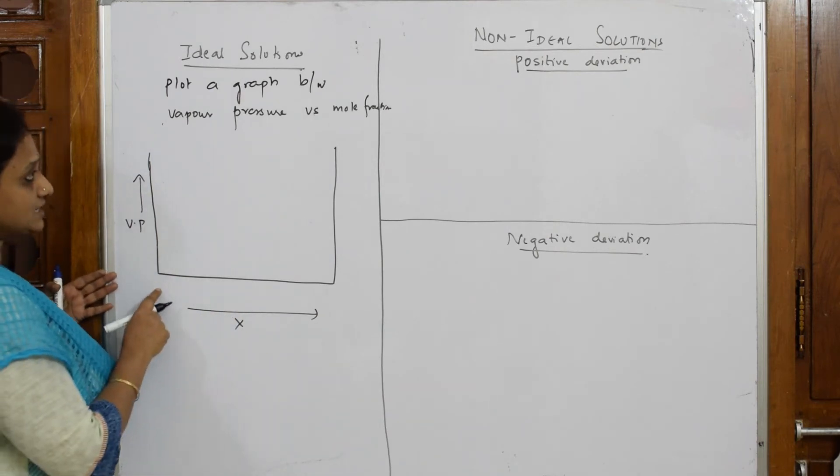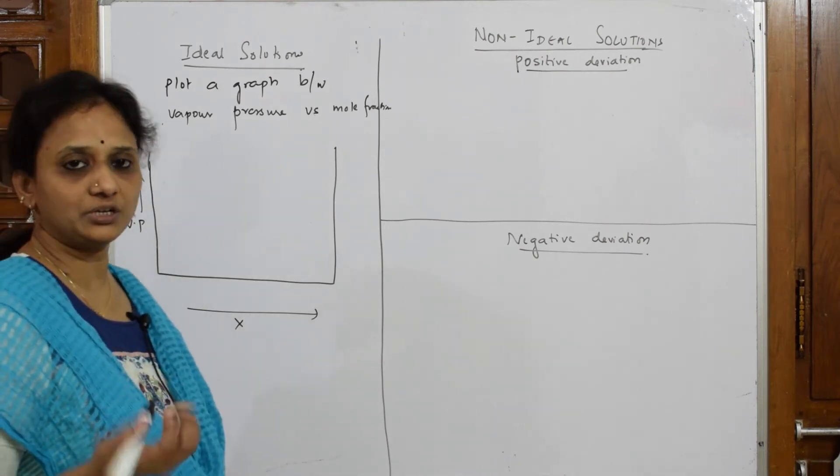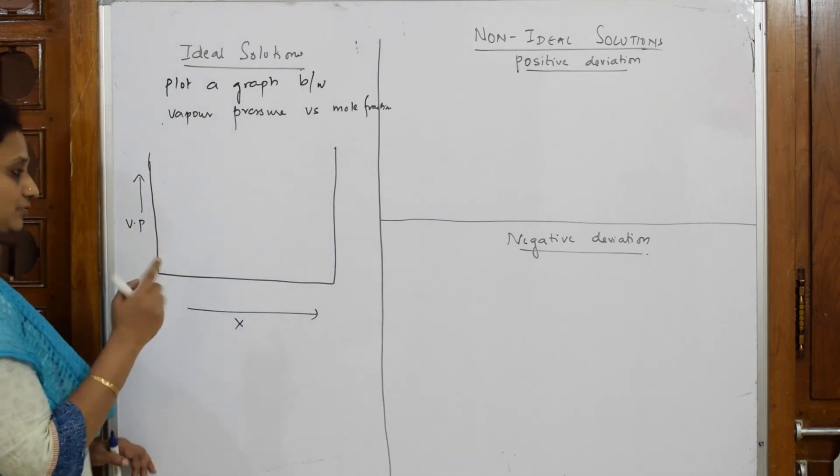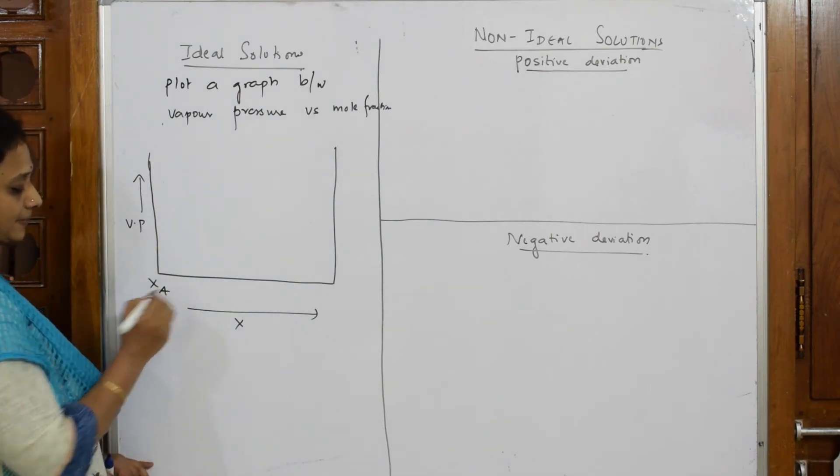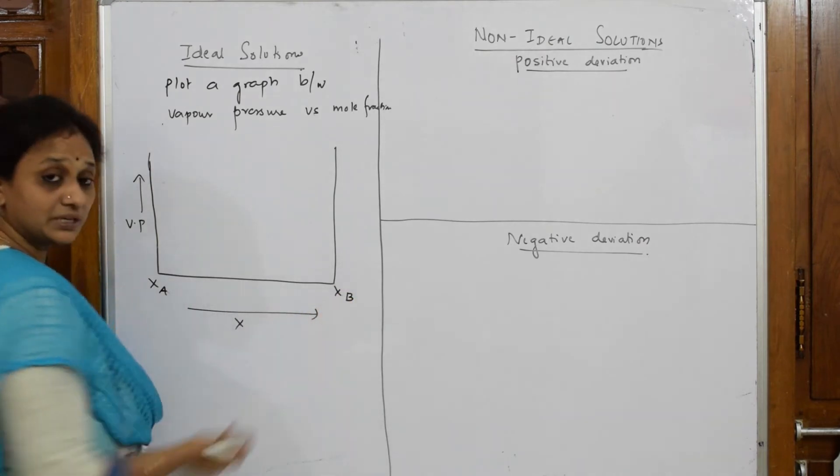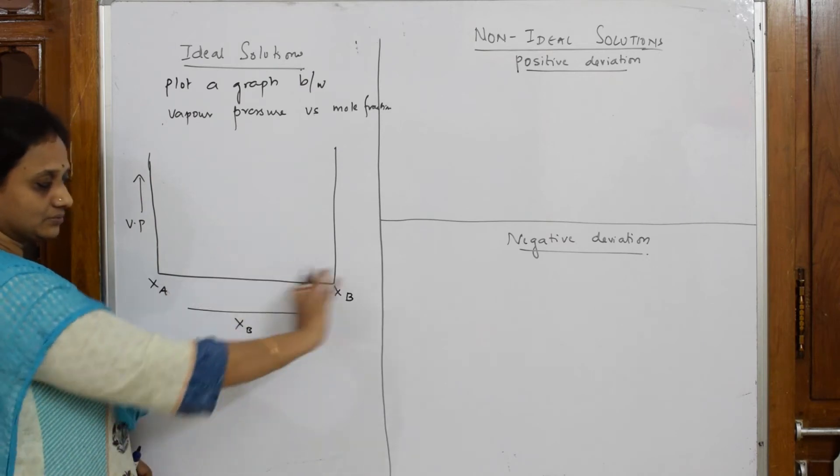Initially I have, I said there are two components, what are they? Component A and component B. Example benzene and toluene. I'm taking benzene constant mole fraction as XA and your toluene concentration is XB. So I'm proceeding towards XB. I'll write it as XB because I'm going towards that.